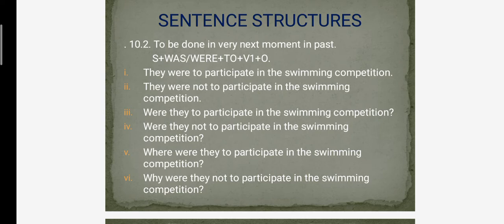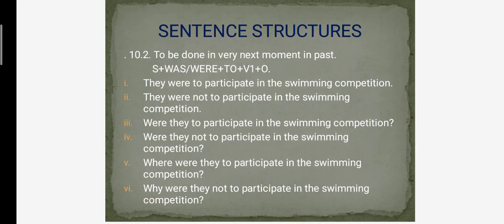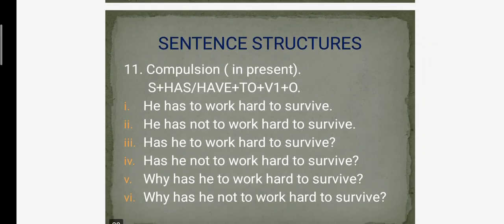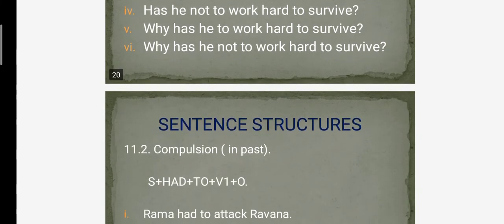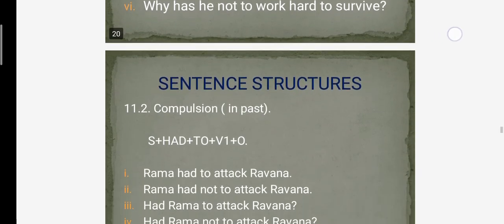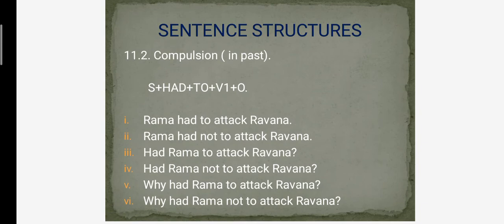These are the formulas. So basically six types of sentences. Grammatically all these are right. Now another structure: as we used for compulsion, this present compulsion. Compulsion is majburi, when you are forced to do something. This was the structure: he has to work hard to survive. In continuation of this structure, we are doing use of had to today. This was compulsion in present, and today we are doing compulsion in past. Subject + had + to + first form of verb + object.